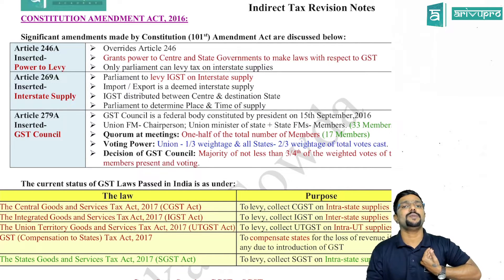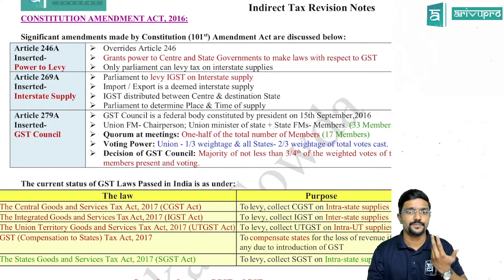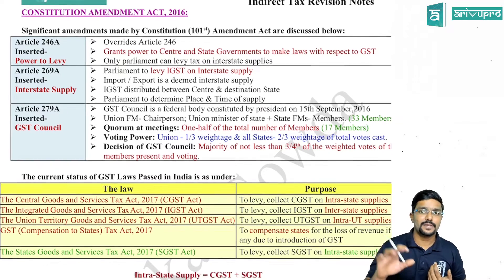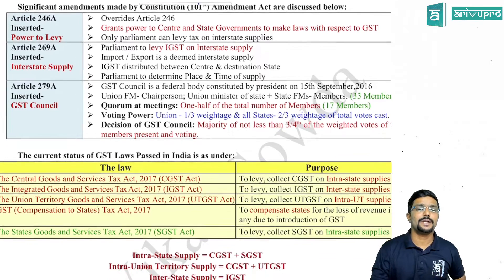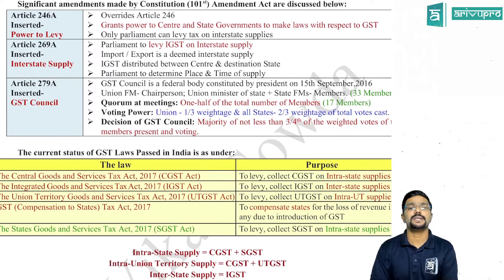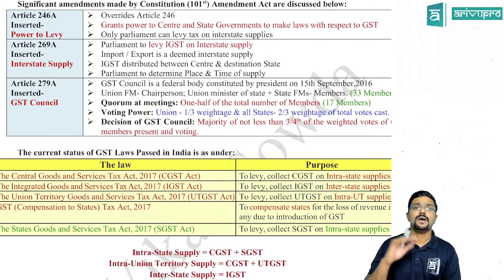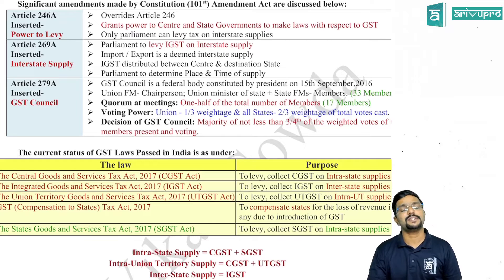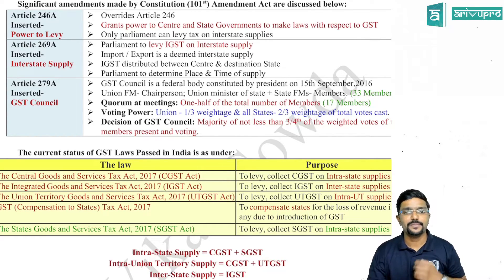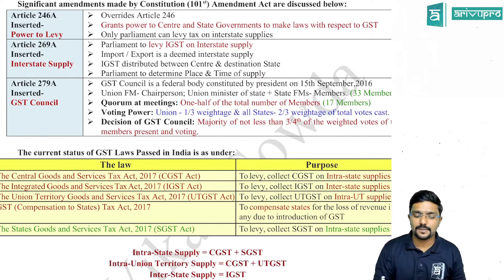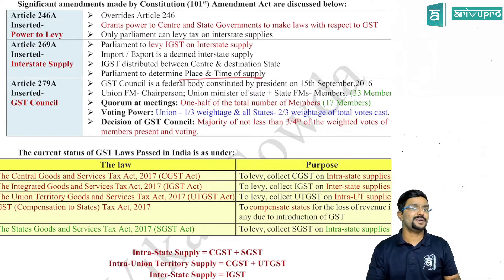Only Parliament, that is the central government, can levy tax in case of interstate supply. Coming to Article 269A, which talks about interstate supply: on interstate supply, IGST would be levied by the central government and shared between the central government and the destination state equally. In case of interstate supply, the place of supply and time of supply has to be decided by the central government.